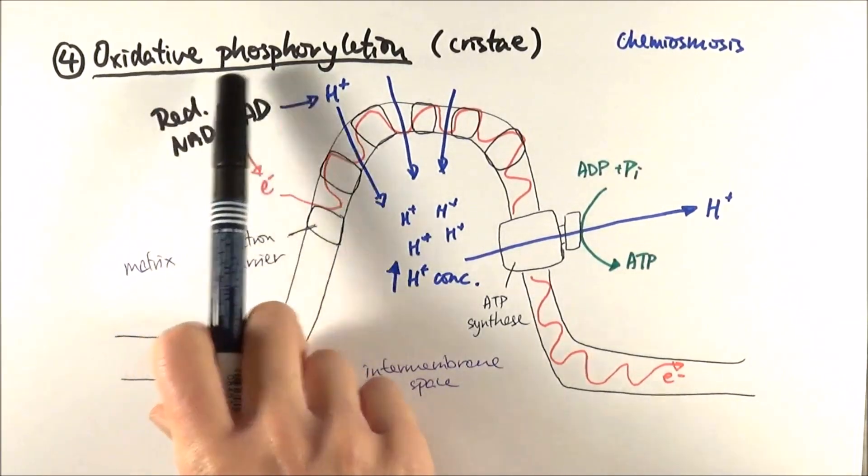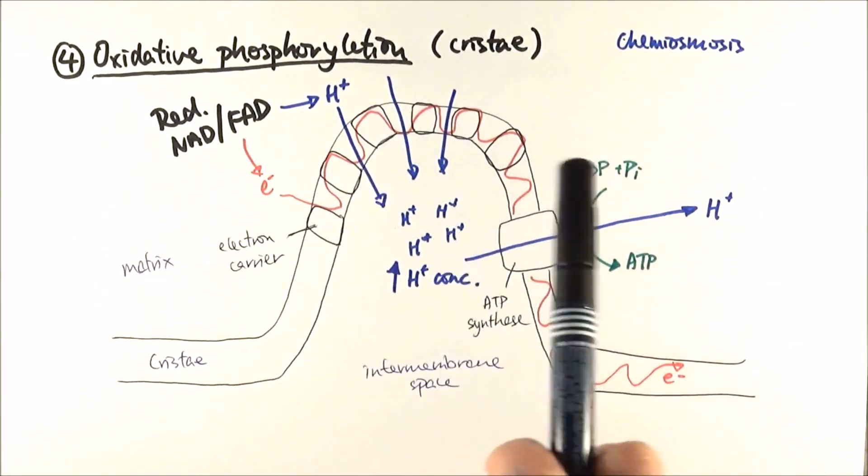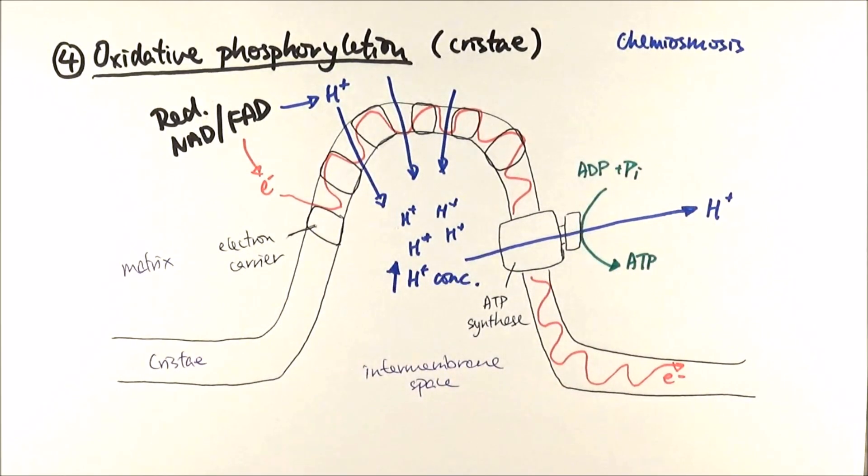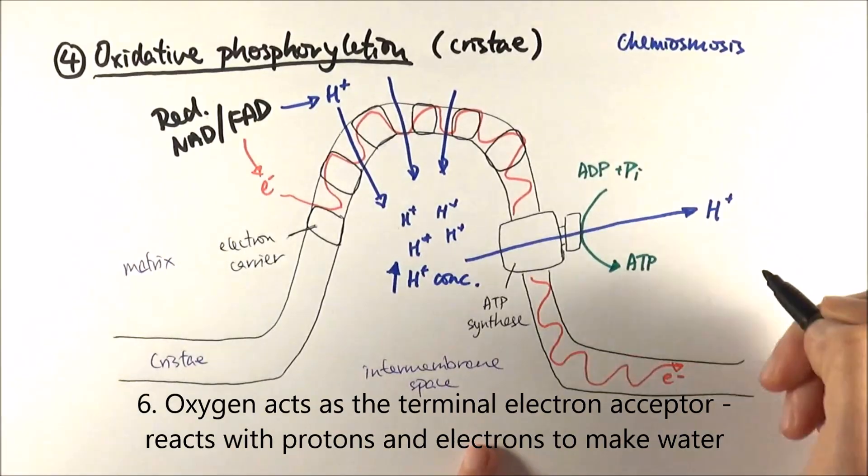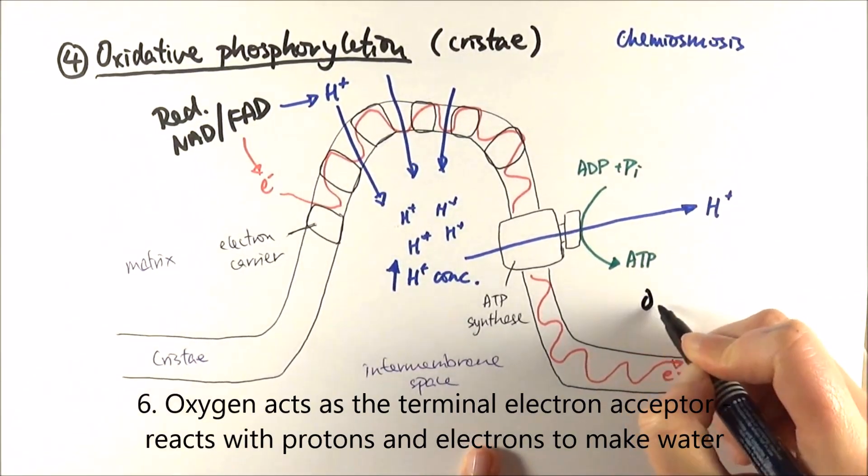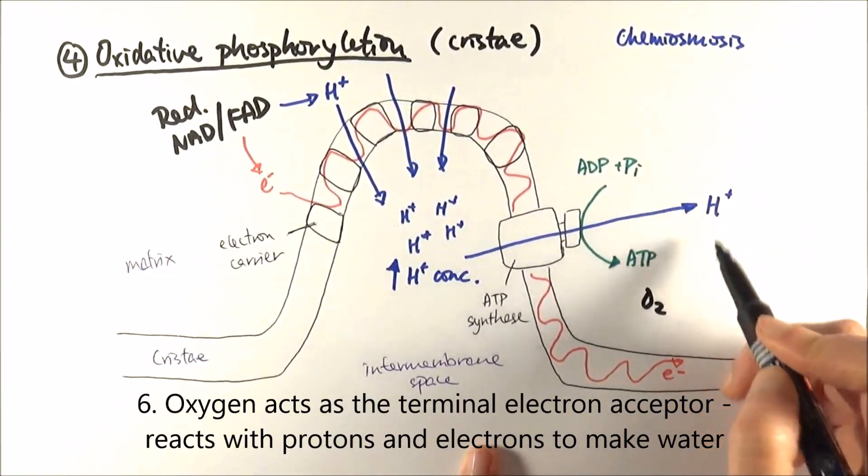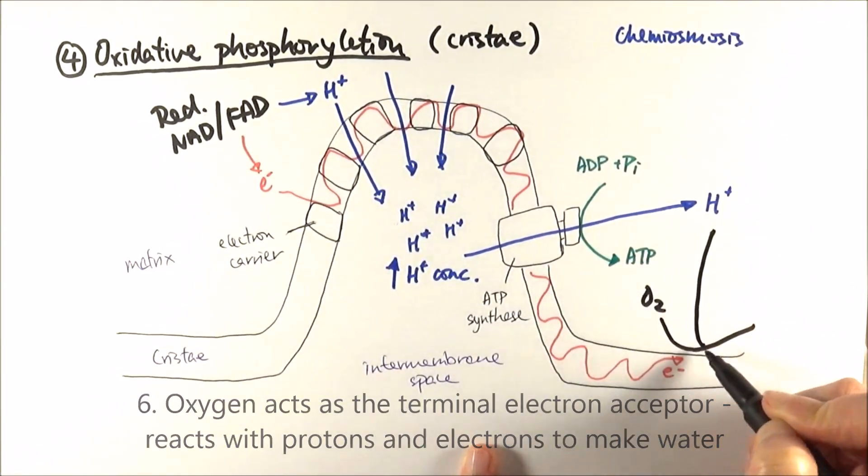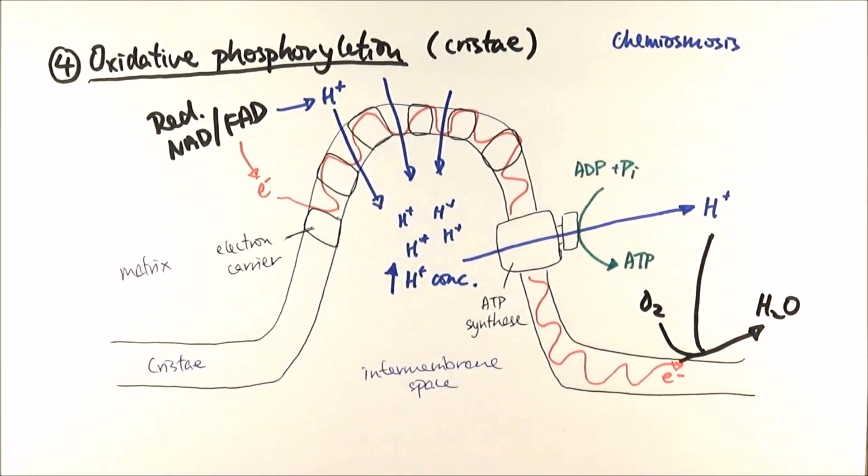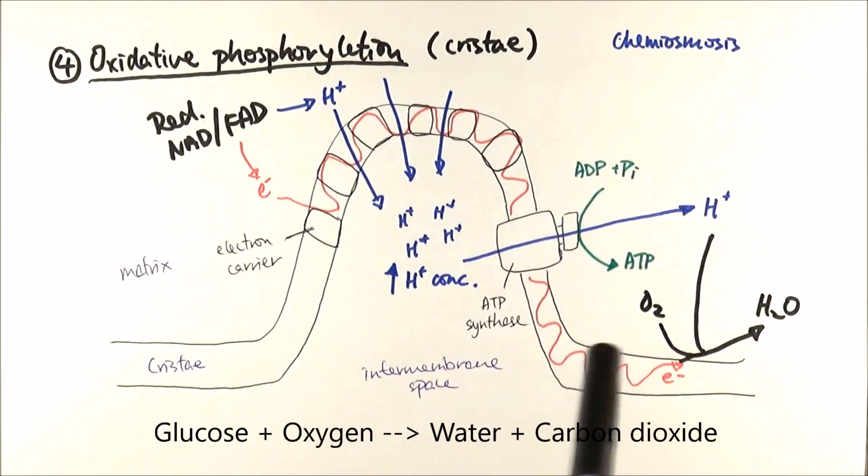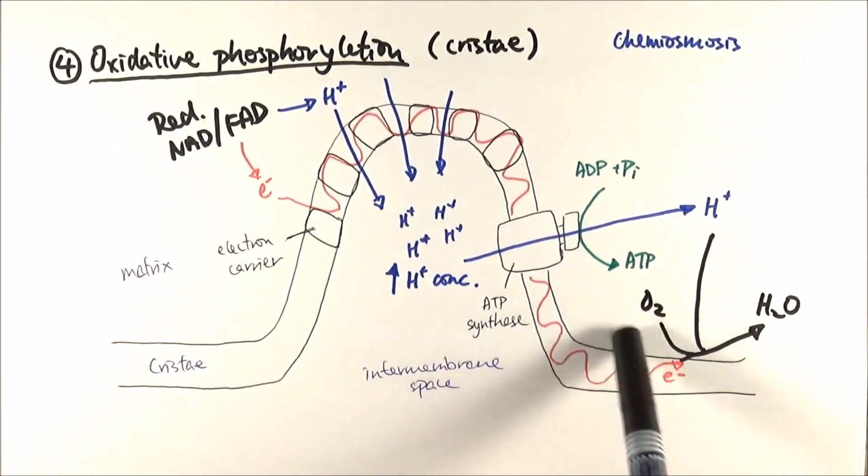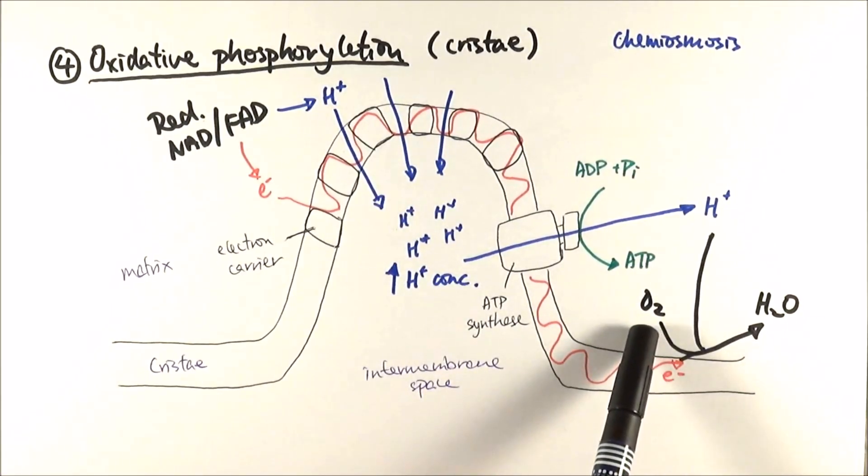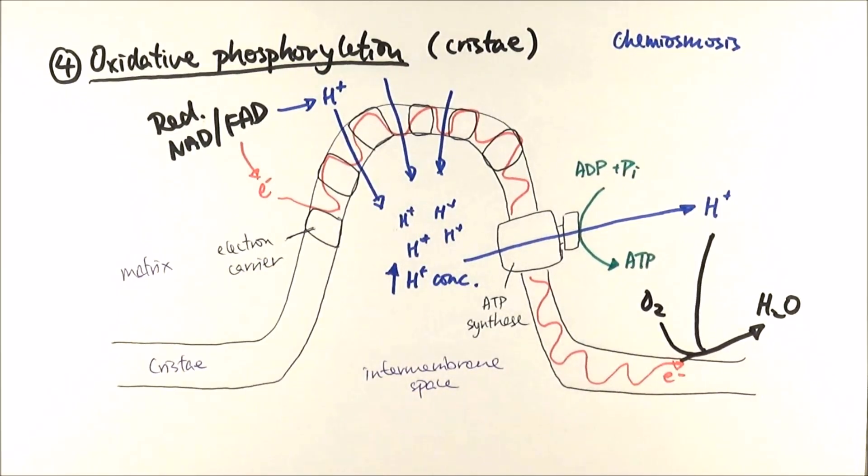And remember, we also have free electrons there as well. So the reason why we call it oxidative phosphorylation, apart from the fact that electron carriers are basically undergoing redox all the time, is the fact that we have oxygen in the final bit, which acts as the terminal electron acceptor. Oxygen comes along and it combines with the protons and electrons to make water molecules. And that's the reason if you think about the whole respiration equation: glucose with six oxygen reacting together to make six water molecules and six carbon dioxide.